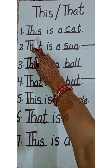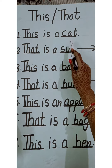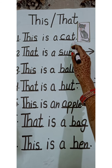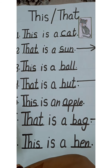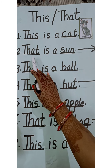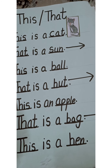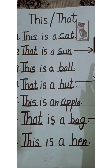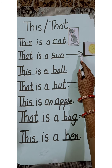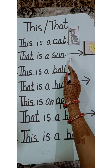First we will read: this is a cat. Here I am putting the picture of a cat. No arrow is here, so we will write: this is a cat. Next is: that is a sun. You know, students, the sun is very far from us. I have put one arrow here, so what we will use for sun? That is a sun.